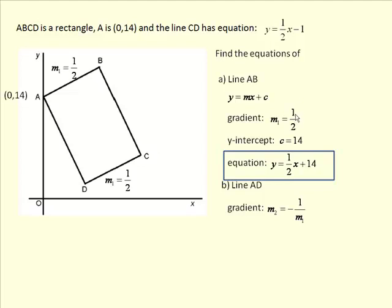And the rule for the gradient of a line which is perpendicular to another one is that the second gradient is minus 1 divided by the first gradient. In this case, it's minus 1 divided by a half, which comes to minus 2.